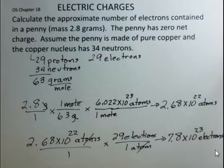But there are huge numbers of electrons in common objects is the point of this calculation. And electrical effects involve large numbers of electrons being moved from one place to another. 7.8 times 10 to the 23rd electrons in a penny that has a mass of exactly 2.8 grams.